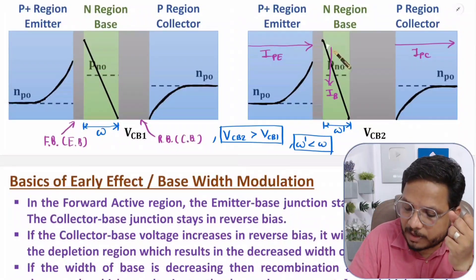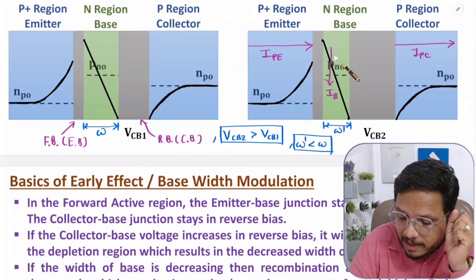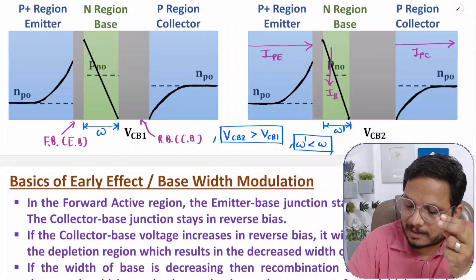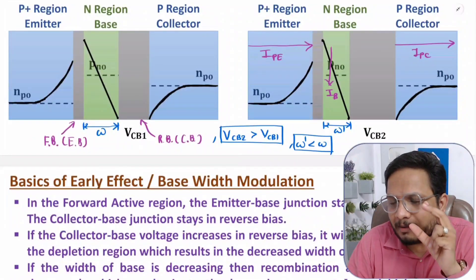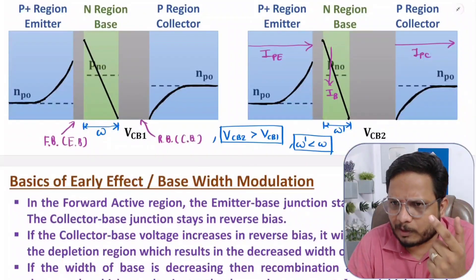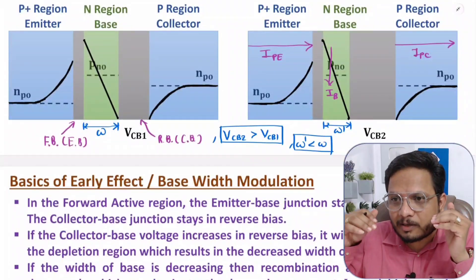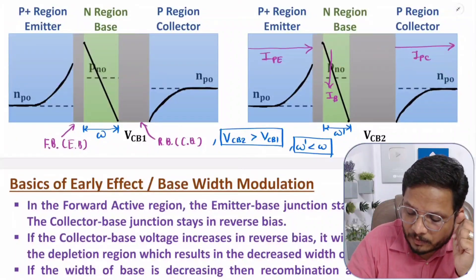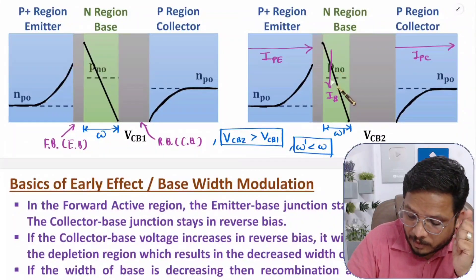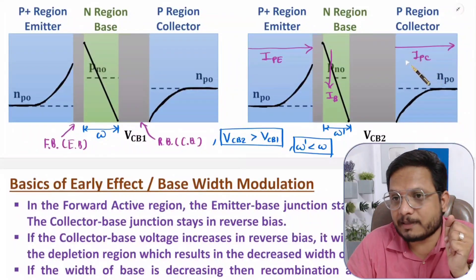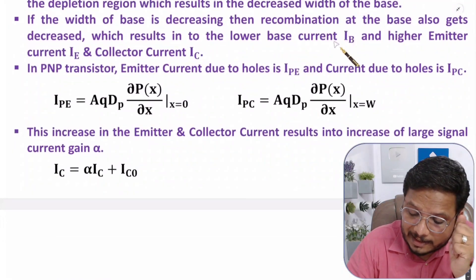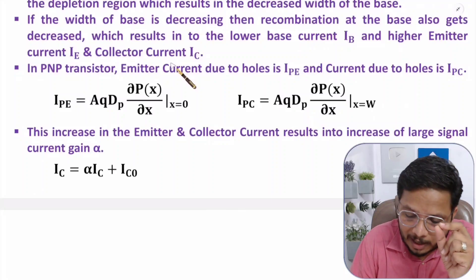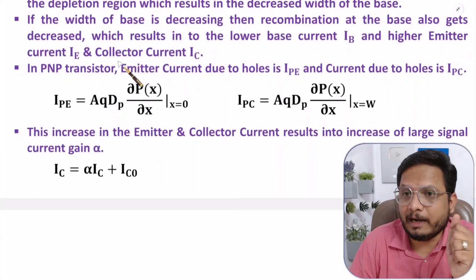As recombination decreases, base current IB decreases. If IB is decreasing, the collector and emitter currents will increase. The analogy is clear: IB = IPE − IPC; as IB decreases, IE and IC both increase. I'll explain how they increase using the diffusion current formula.